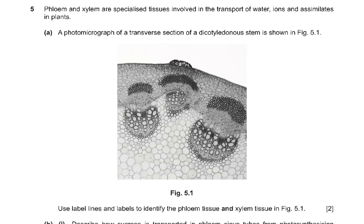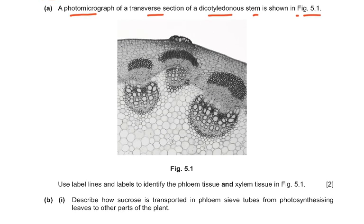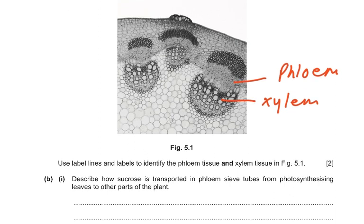Question 5: Phloem and xylem are specialized tissues involved in the transport of water, ions and assimilates in plants. A photomicrograph for transverse section of a dicot stem is shown in Figure 5.1. Use label lines to identify the phloem tissue and xylem tissue — this is the xylem and this is the phloem. Then describe how sucrose is transported in phloem sieve tubes from photosynthesizing leaves to other parts of the plant.